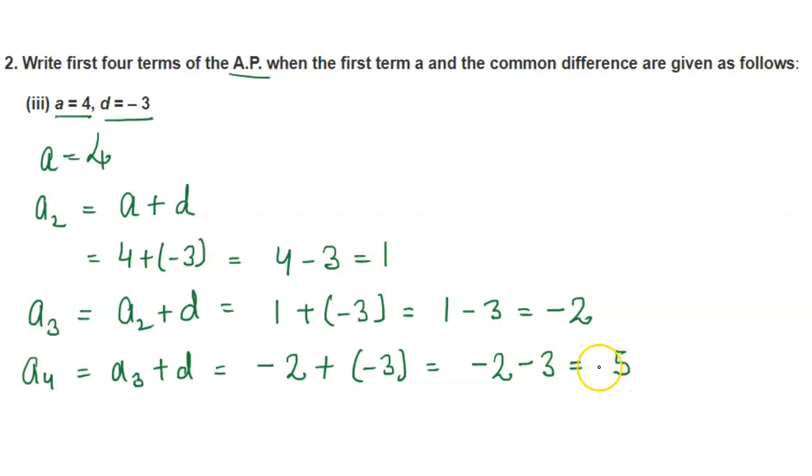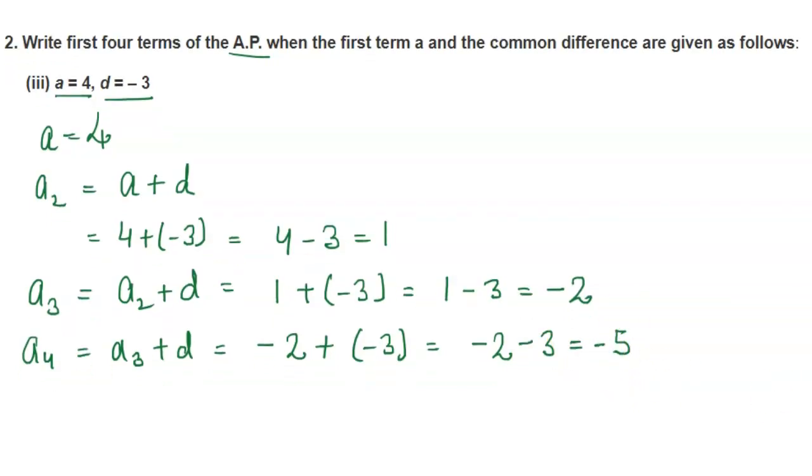So, the first four terms are: 4, 1, minus 2, and minus 5. Thank you.